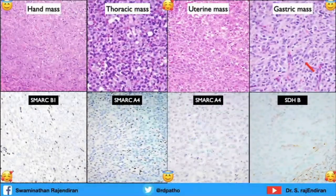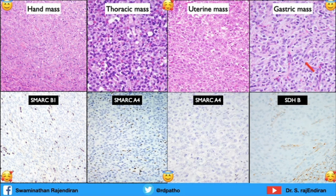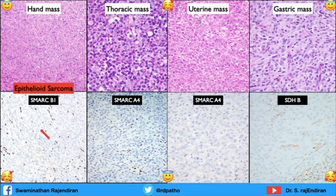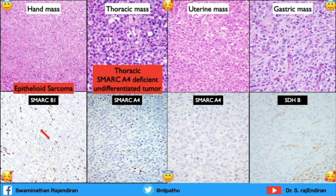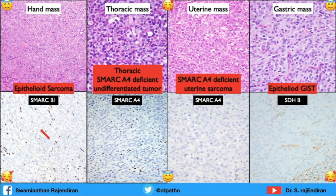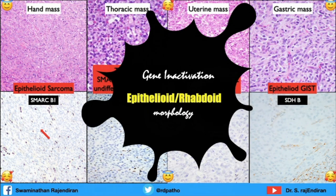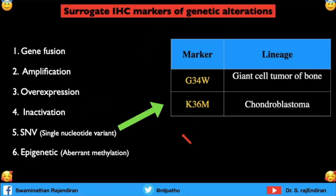Important concept: for inactivation markers, always look for background endothelial cells or inflammatory cells as the built-in positive control — they will be positive while the tumor is negative. This hand mass shows SMARCB1/INI1 loss — classic of epithelial sarcoma. A thoracic mass with SMARCA4 loss is a thoracic SMARCA4-deficient undifferentiated tumor. A uterine mass with SMARCA4 loss is a SMARCA4-deficient uterine sarcoma. SDHB-deficient gastric mass is epithelioid GIST. Gene inactivation tumors typically show epithelioid or rhabdoid morphology.